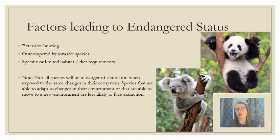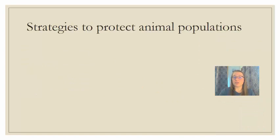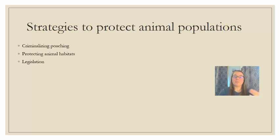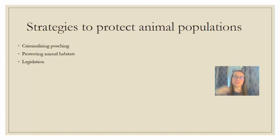There are things we can do to protect these populations. Key strategies include criminalizing poaching, protecting animal habitats, proposing legislation to enforce those measures, and educating and transitioning local human populations to help them see that protecting these animals provides greater long-term economic viability than poaching or destroying habitat.